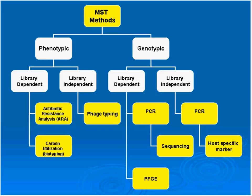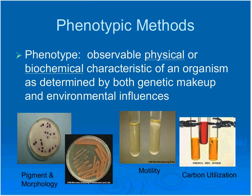Under genotypic methods, you have the same two categories. PCR can be used for either library-dependent or library-independent methods. You also have sequencing. PCR is used to look for host-specific markers, and for library-dependent methods you may use PFGE, which I'll explain later. The definition of phenotype is an observable physical or biochemical characteristic of an organism, which can vary depending on environmental factors.